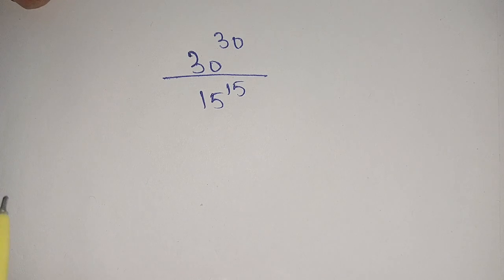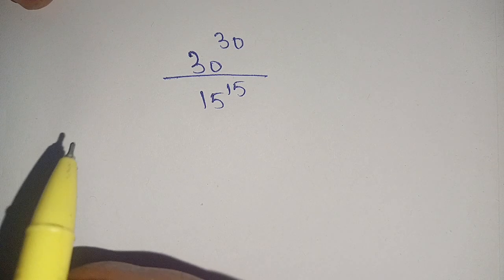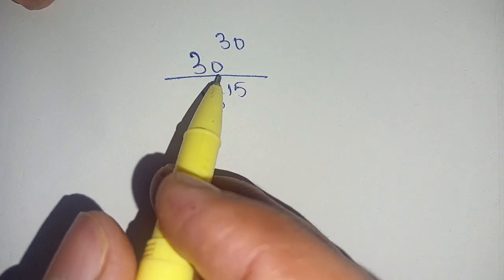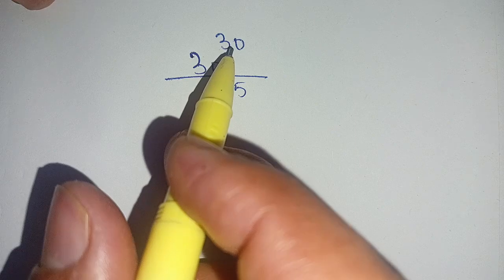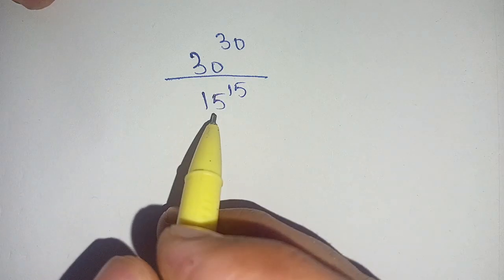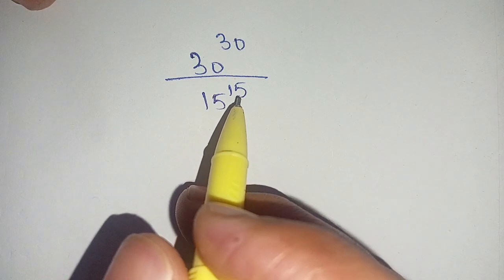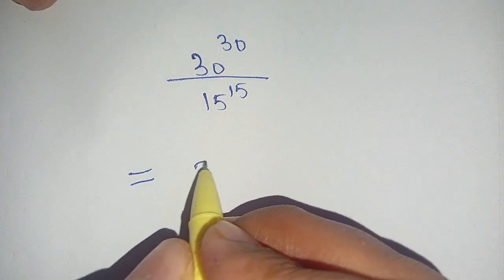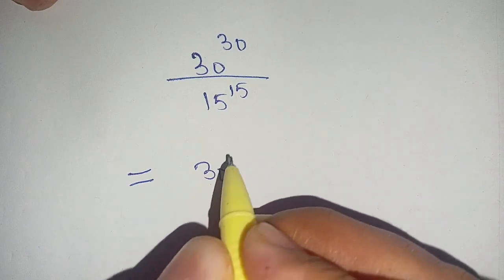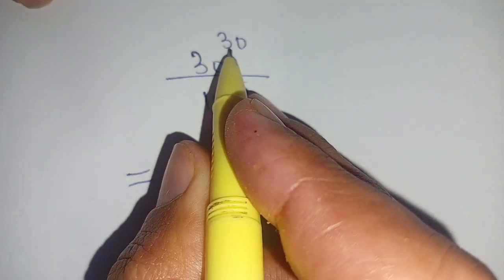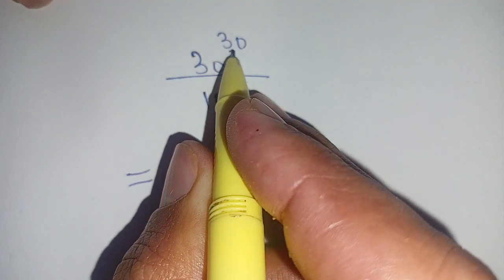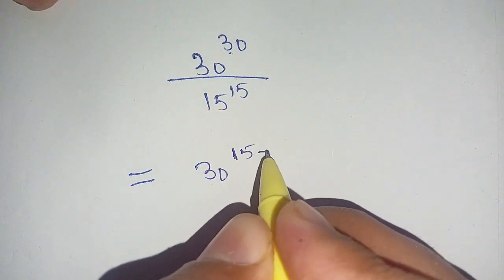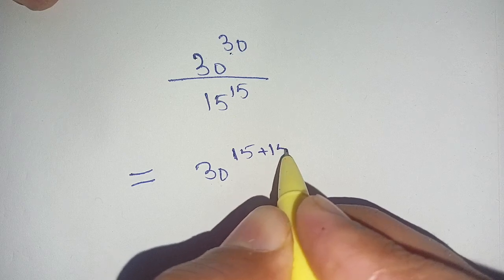Hello everyone. In today's video we are going to solve this exponential problem: 30 power 30 divided by 15 power 15. Let us solve this. We can write it as 30 power 30, which can be broken down as 15 plus 15.